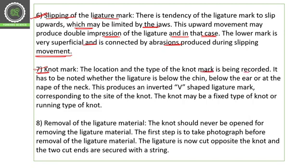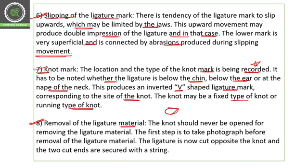Regarding the knot mark, the location and type of knot must be recorded — investigative personnel must photograph and note whether the ligature is below the chin, below the ear, or at the back of the neck. This produces an inverted V-shape ligature mark corresponding to the side of the knot. The knot may be a fixed type or a running type; a fixed knot creates a more prominent impression.